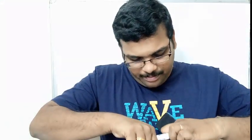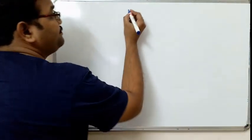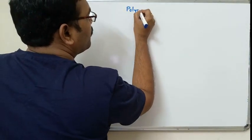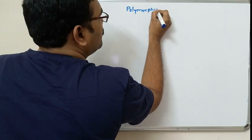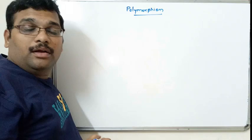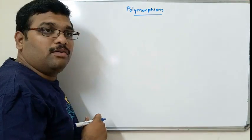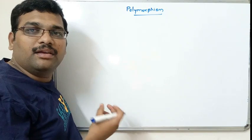Hello friends, welcome back to our channel. In the previous session we saw the method overriding concept, and in earlier sessions we saw method overloading. In this session we will see the difference between method overloading and method overriding. Both come under one of the OOP concepts, that is polymorphism — implementing the same thing in different ways.